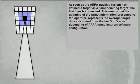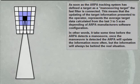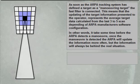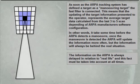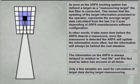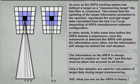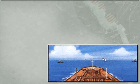As soon as the ARPA tracking system identifies a target as a manoeuvring target, the fast filter is connected. This means that the updating of the target information presented to the operator represents the average of the target's last three to five radar scans. It takes some time once the manoeuvre is detected before information updates more frequently, and the operator must remember that the displayed information during target manoeuvring is always history.